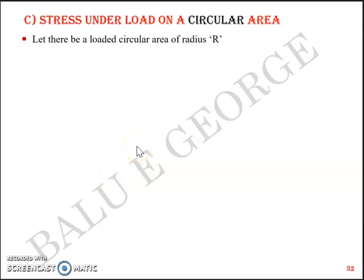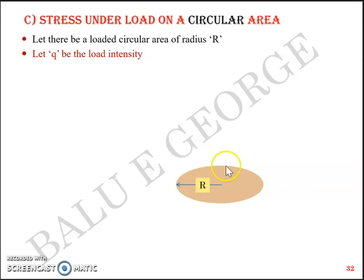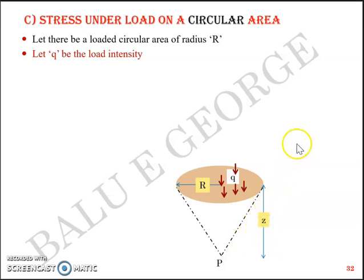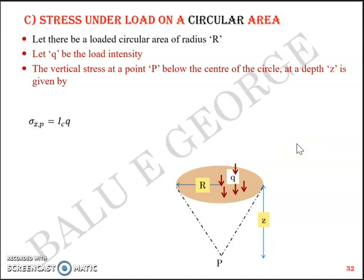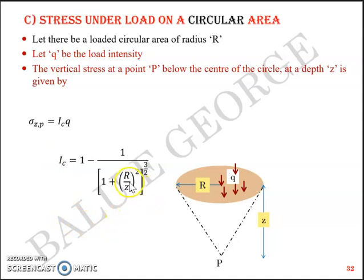Assume there is a loaded circular area of radius R, and let q be the load intensity in kilonewtons per meter squared. If you want to find the vertical stress at a point P below the center of the circular area at depth z, you can use the equation σzp = Ic × q. Here Ic is a function of radius R and depth z, given by: Ic = 1 minus 1 divided by [1 + (R/z)²] raised to the power 3/2.